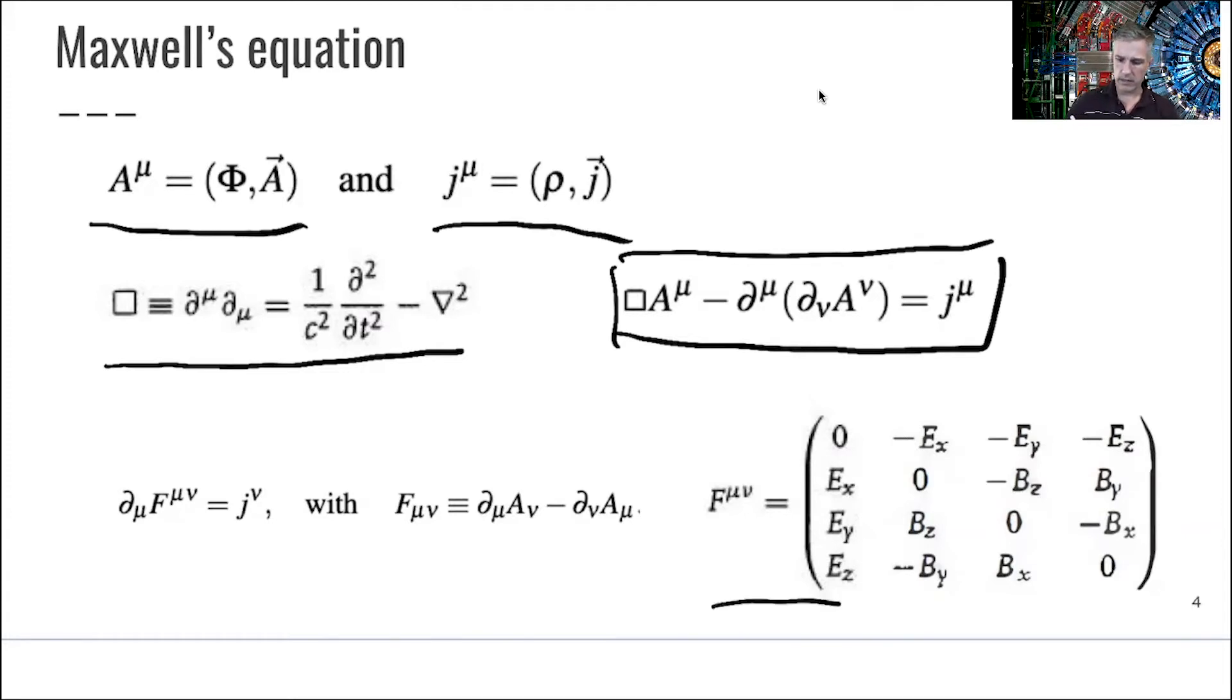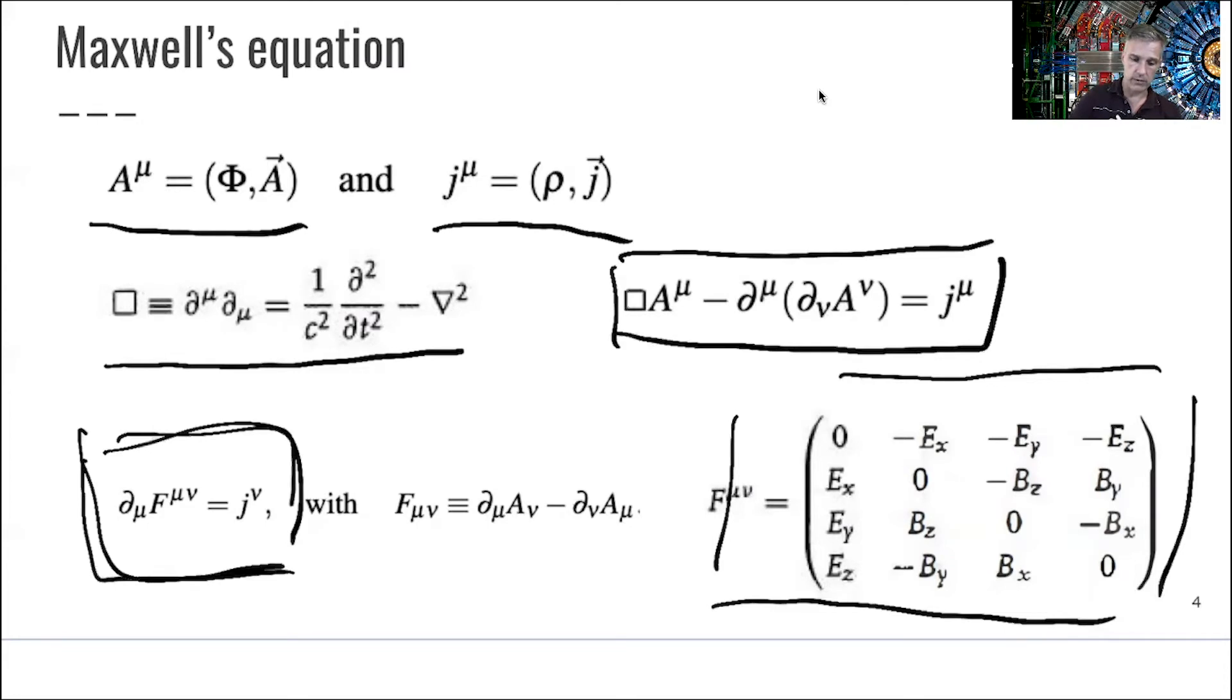This here is yet another form to write Maxwell equations, where f is our field strength tensor. And the field strength tensor has all the physics involved. You see that you're describing the electromagnetic field in its components. And then the simplification of the Maxwell equations are sitting here. So we have the Maxwell equation in this form. We have the Maxwell equation in this form here.